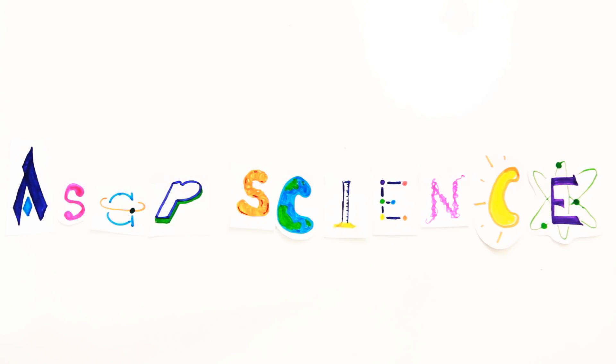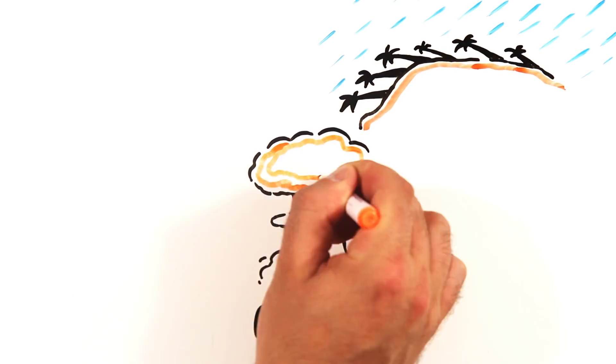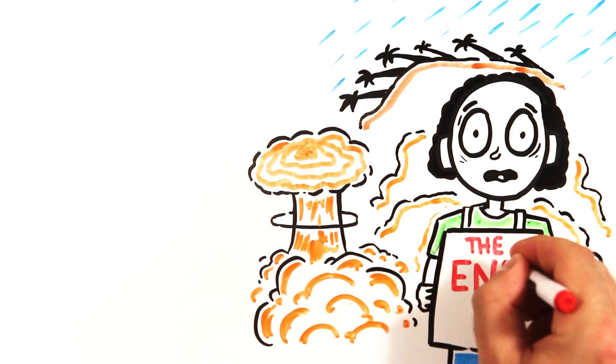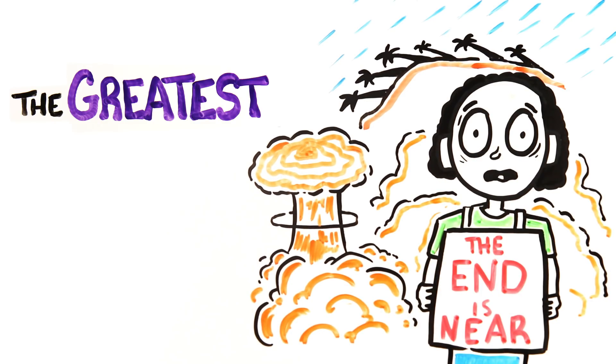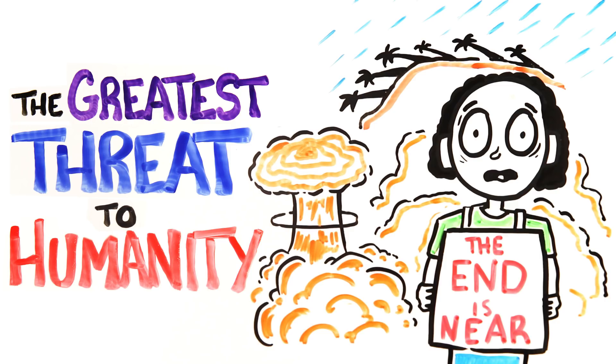With devastating hurricanes, refugee crisis, and the real possibility of nuclear war, it can sometimes feel like the end is near. But what are the biggest threats to humanity, and is there anything we can do to stop them?